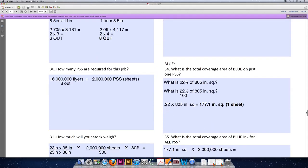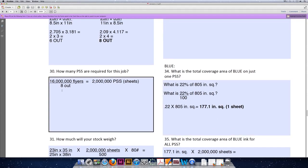Question 30: How many press size sheets are required for this job? The formula is quantity divided by number out. We are printing 16 million flyers, we can fit eight flyers on each sheet, which means we need to purchase a total of two million sheets of paper, or two million PSS or press size sheets.